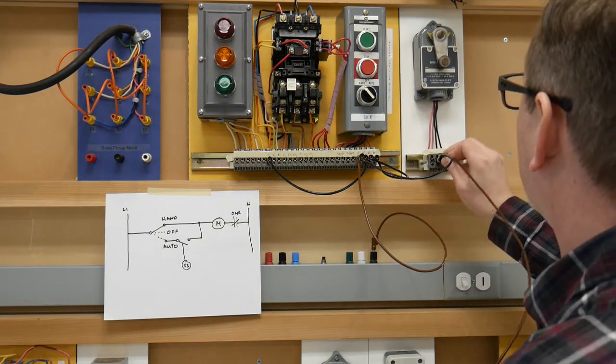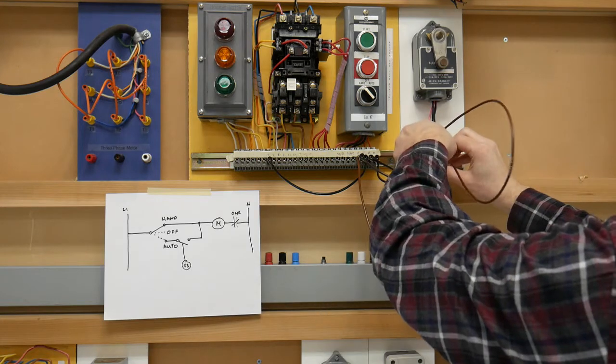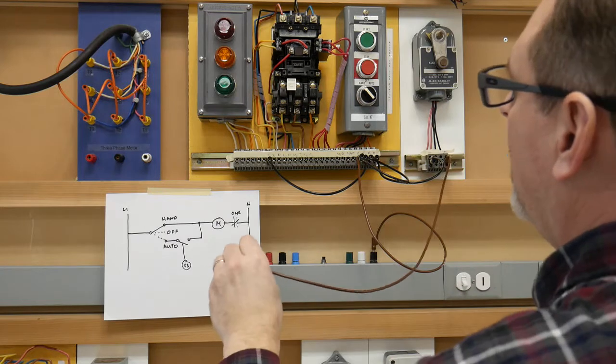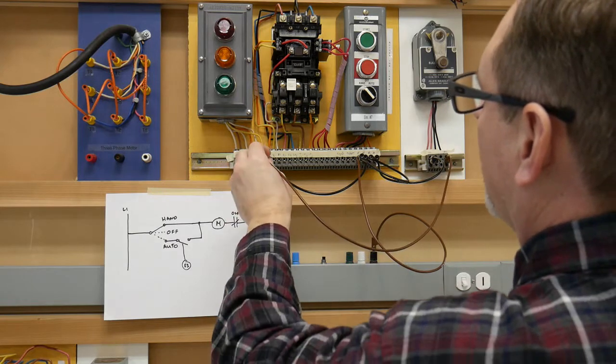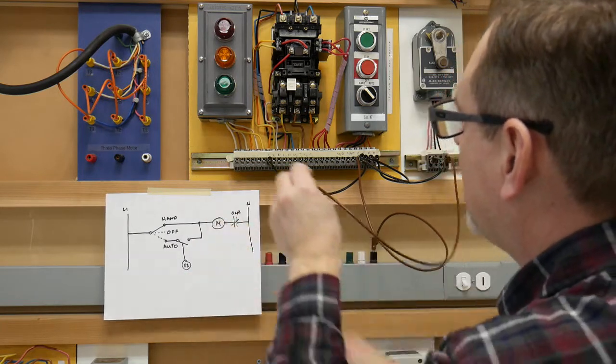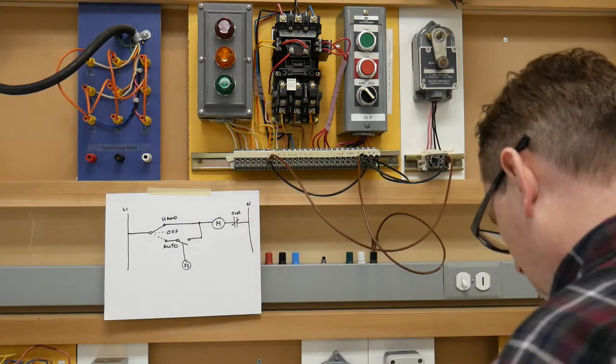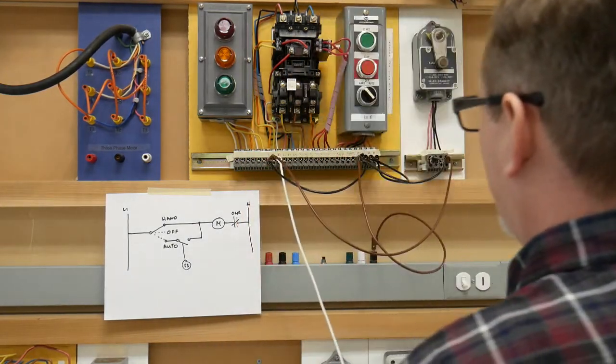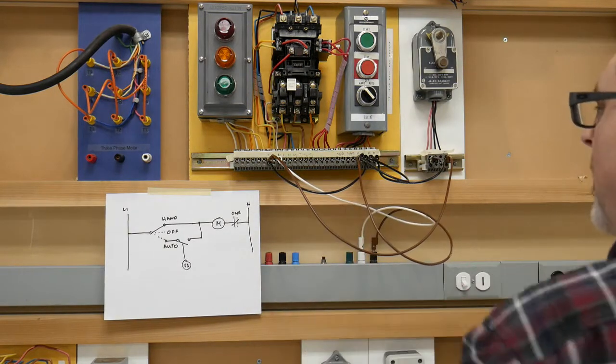Out of the other auto, whoops hang on I was in the normally closed there, let's go open. And we are then going to go all the way over from here back to the coil. And last but not least of course we need to make sure that we have our neutral connected up so that our control circuit will work properly.